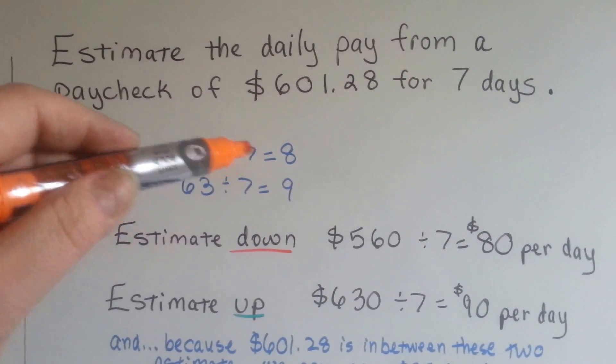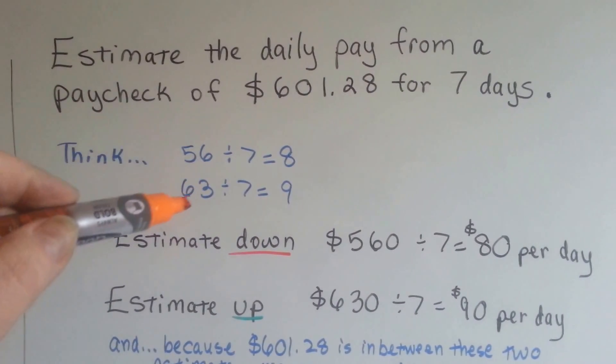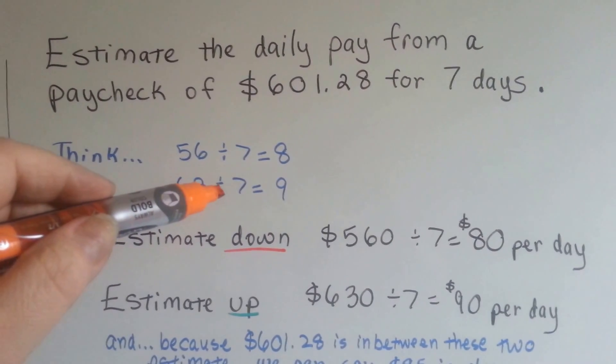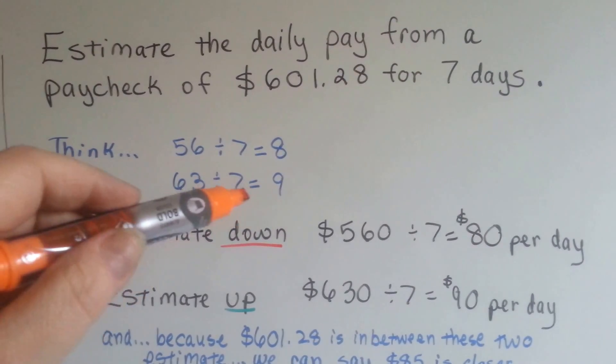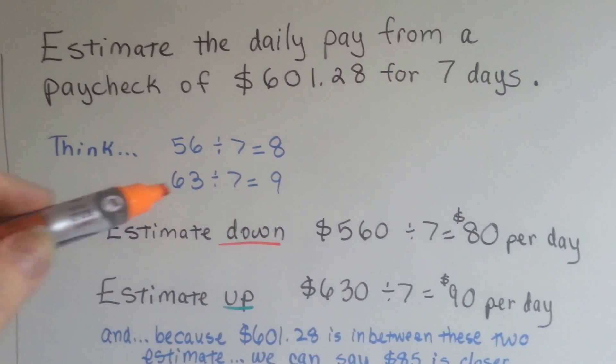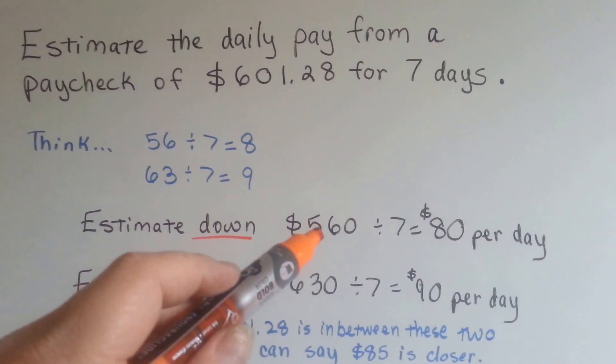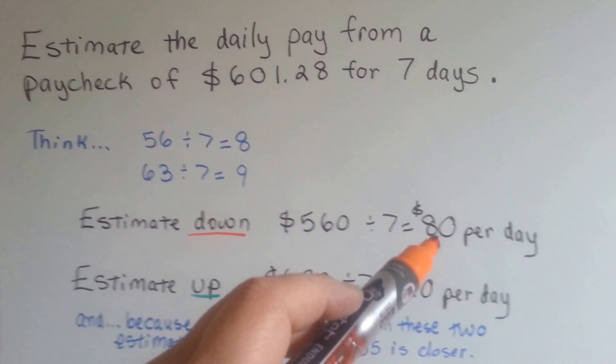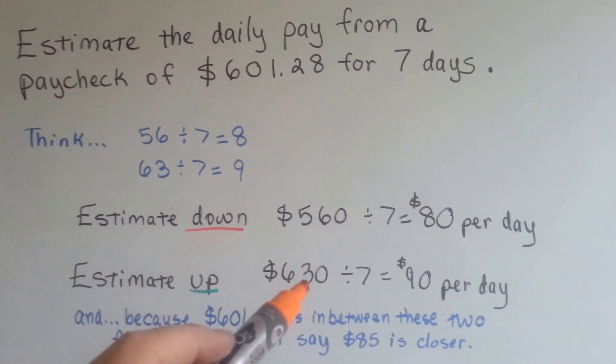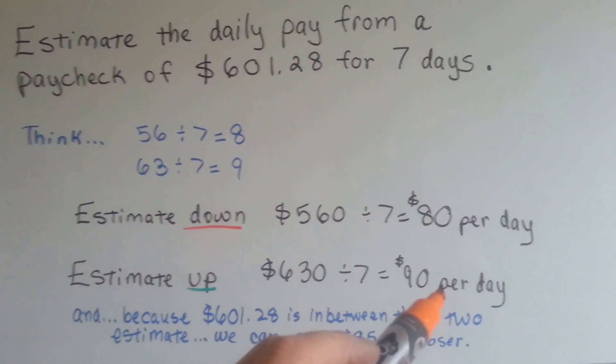Well, 56 divided by 7 is 8, so we could go with 560. And 63 divided by 7 is 9, which is compatible. So we could go to 630. Let's estimate down and do 560. Then we know that it's about $80 a day. And if we estimate up to the 630, we know it's about $90 per day.